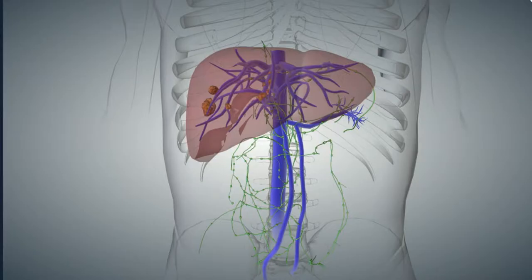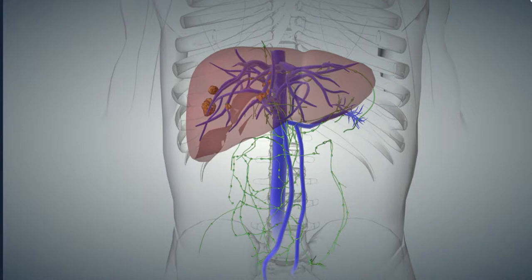Sure. Liver cancer staging really depends on the number and the size of the tumors. I won't go into the details of what makes a stage 2 or a stage 3 tumor, but what is important to focus on is that the liver is in the upper abdomen — it's a relatively large organ.